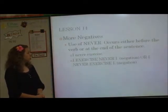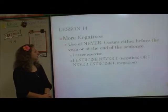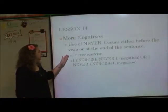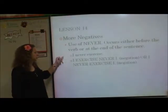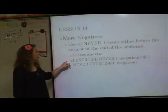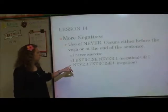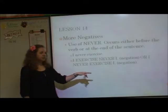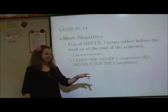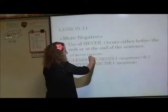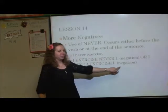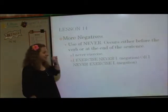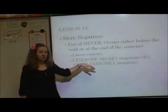It occurs either before the verb or at the end of the sentence. So in the sentence 'I never exercise,' you can do it two ways. It can be 'I exercise never I,' or it can be 'I never exercise I.' This one has the imaginary line over it with an N — that's why I put negation or N in parentheses. So it has the negation over it.